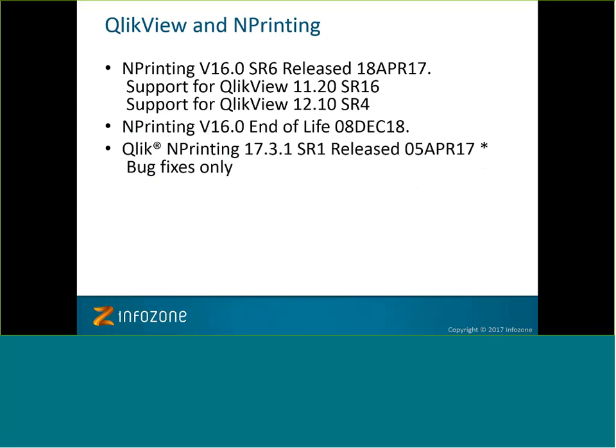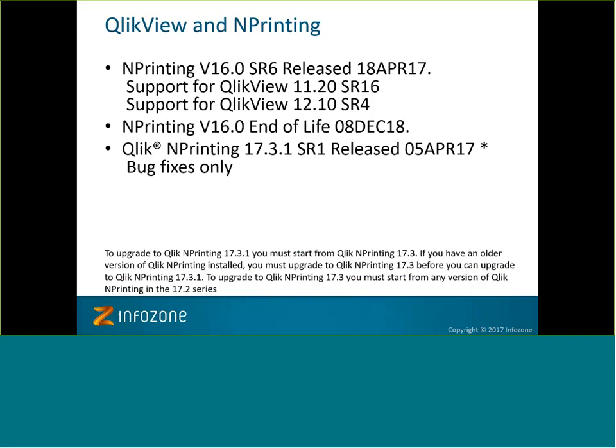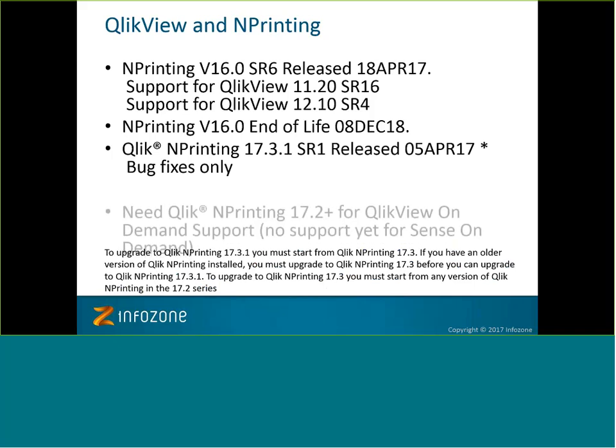If you are interested in nPrinting 17, the latest release is 17.3.1 SR1, released beginning of April — bug fixes only. For those interested in a long and winding upgrade path: to get to 17.3.1 you have to start from 17.3; to get to 17.3, you have to start from 17.2. So if you are on an older release of nPrinting 17, you have to go to 17.2, then 17.3, then 17.3.1 — a bit of a winding road, but there is a path.